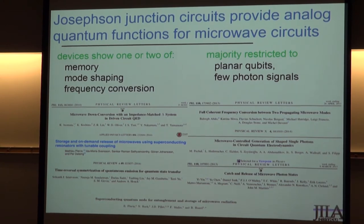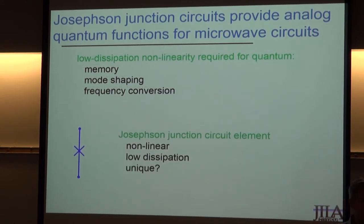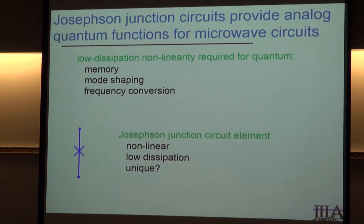All of this work uses a Josephson junction as the key signal processing element, because for signal processing where you want to keep every photon, you need dissipationless or extremely low dissipation elements. If you want a linear time-independent element, you've made a filter. Anything else typically needs a nonlinear element. The Josephson junction is the low-dissipation nonlinear circuit element for electrical frequencies. The claim is often made that it is the only electrically nonlinear dissipationless circuit element, and it's true the nonlinearity can be very strong.